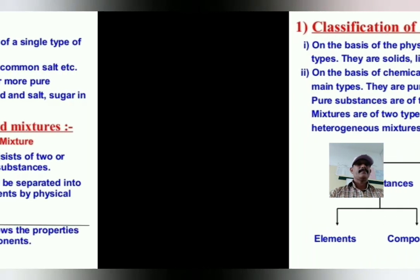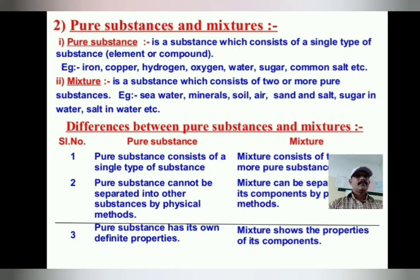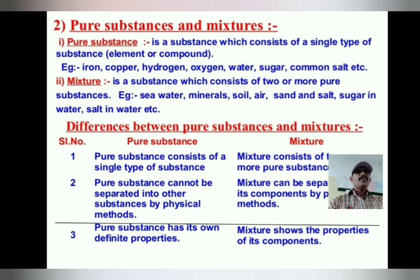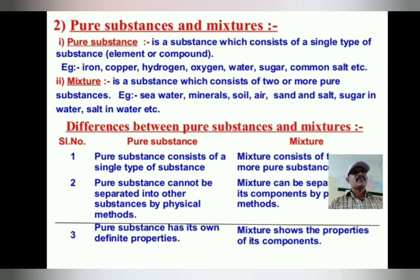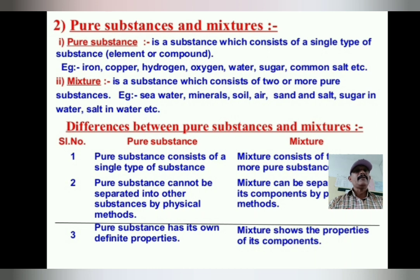A pure substance consists of a single type of substance — elements or compounds. It is made up of the same kind of atoms or particles. Examples: Iron (Fe), Copper (Cu), Hydrogen (H), Oxygen (O).